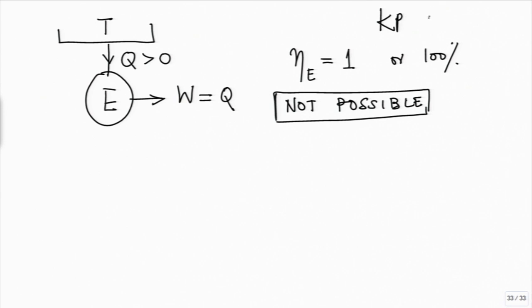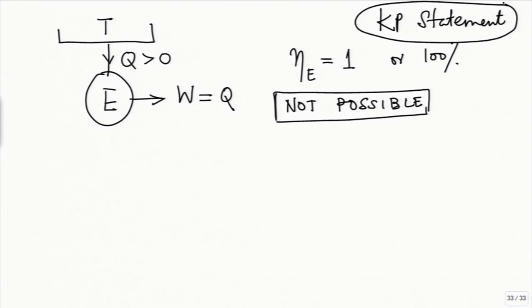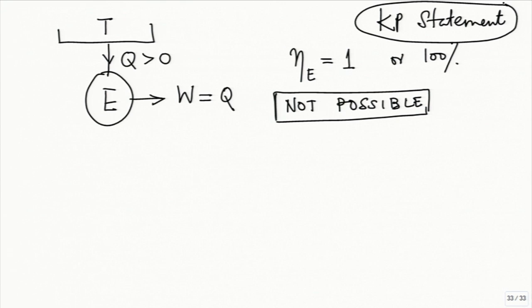The Kelvin-Planck statement is equivalent to saying that the efficiency of an engine which interacts thermally only with one reservoir cannot be 100 percent; such an engine is not possible.